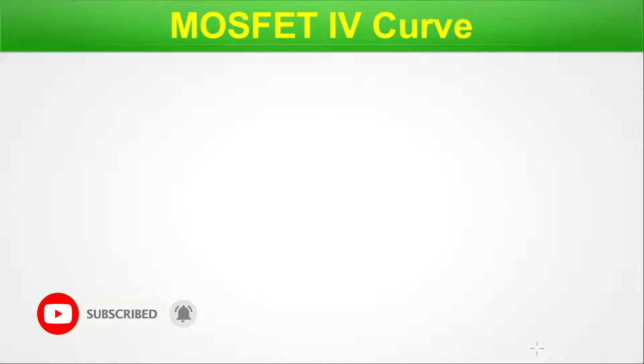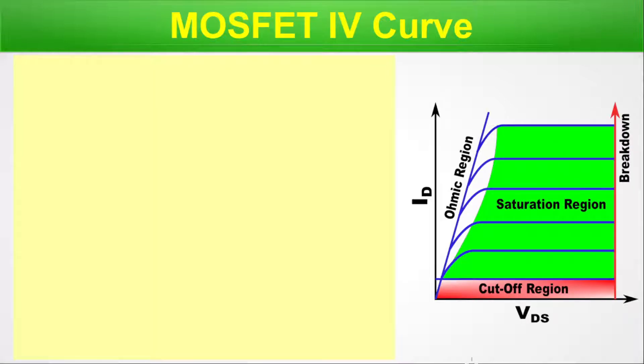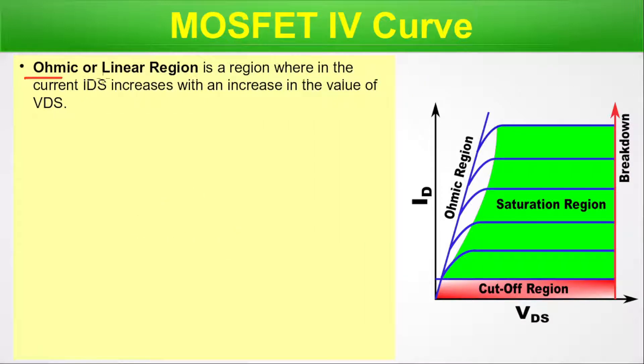Now the MOSFET IV curve. In this slide we will talk about the basic regions in a MOSFET IV curve — we extend this concept to the CMOS switching curve. This graph shows VDS versus IDS. The ohmic or linear region is where the current IDS increases with the value of VDS — here the voltage and current increase in an approximately linear fashion. This is the ohmic region.